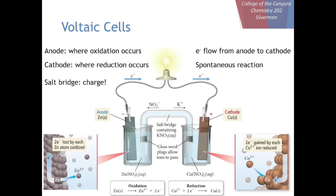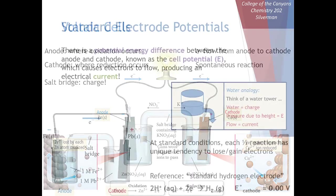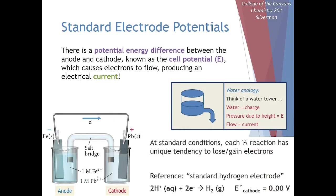Previously, we've been thinking about voltaic cells, where we have a redox reaction with the oxidation separated from the reduction. Our oxidation occurs at the anode, our reduction occurs at the cathode. Since these are separated from each other and need to transfer electrons, our goal now is to look at why these reactions occur spontaneously, think about the energetics of these half reactions, and study the electrochemistry of the currents that can be produced.